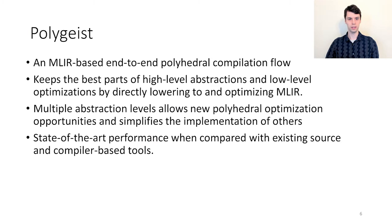Building off of MLIR, we created Polygeist, an end-to-end polyhedral compilation flow that is able to keep the best parts of high-level abstractions and low-level optimizations by directly lowering to and optimizing MLIR. Moreover, this added abstraction-crossing flexibility enables Polygeist to create new polyhedral optimization opportunities, such as statement splitting, and greatly simplifying the implementation of others, such as parallel reduction detection. This enables Polygeist to achieve state-of-the-art performance when compared with existing source and compiler-based tools.